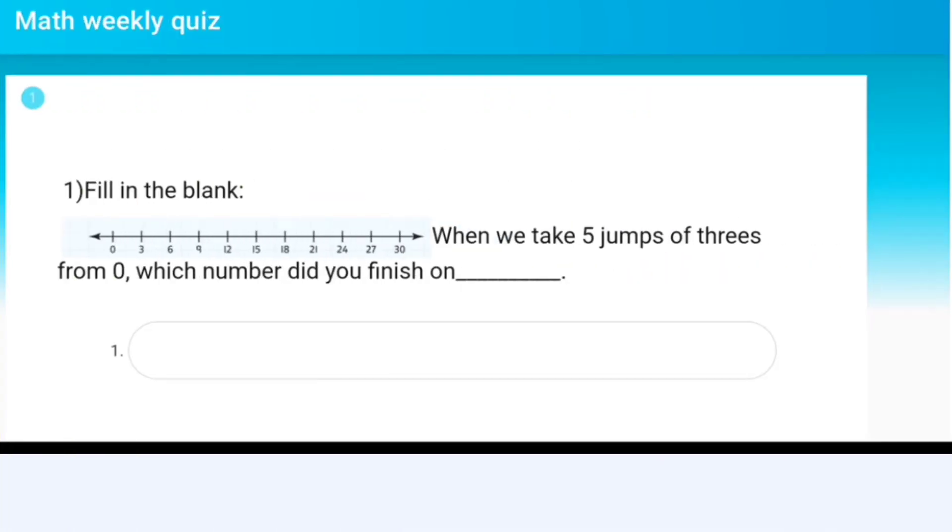Fill in the blank: When we take 5 jumps of 3s from 0, which number did you finish on?